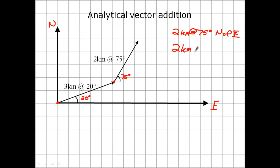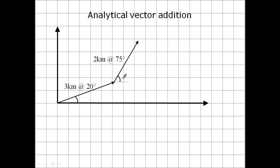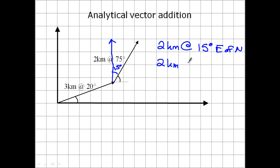You can write this as 2 kilometers at 75 degrees north of east, or another way: 2 kilometers traveling east, you go 75 degrees north — it means the same exact thing. Now we can also look at it from the north direction. Instead of 75 north of east, if we look from north, this angle is 15 degrees, because 15 plus 75 is 90. So we can also write that as 2 kilometers at 15 degrees east of north, or 2 kilometers north, 15 degrees east. Both mean the same exact thing.